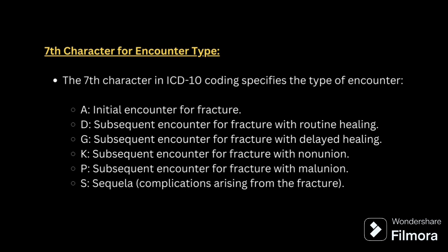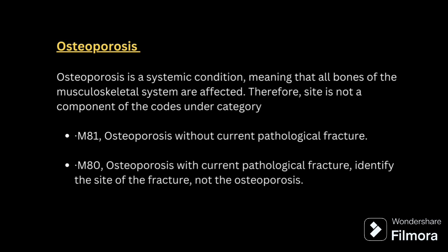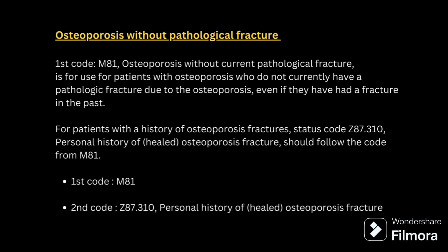For non-union and malunion, you have to know the exact definition of each. Next comes osteoporosis. Osteo means bone, porosis means hole — so if holes are forming in the bone, that condition is called osteoporosis. Whenever coding for osteoporosis, check whether it is with pathological fracture or without pathological fracture. If it is with pathological fracture, code M80. If it is without pathological fracture, code M81.